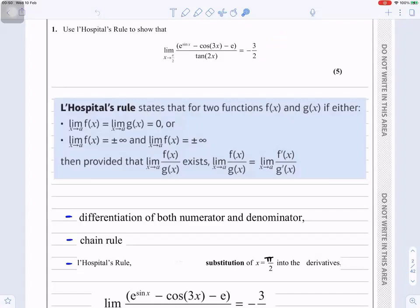L'Hôpital's rule states that for two functions f(x) and g(x), if either the limit of f(x) equals the limit of g(x) equals 0, or the limit as x tends to a of f(x) is plus or minus infinity and the limit as x tends to a of g(x) is plus or minus infinity, then provided that the limit of f'(x)/g'(x) exists, the limit of f(x)/g(x) equals the limit of f'(x)/g'(x).